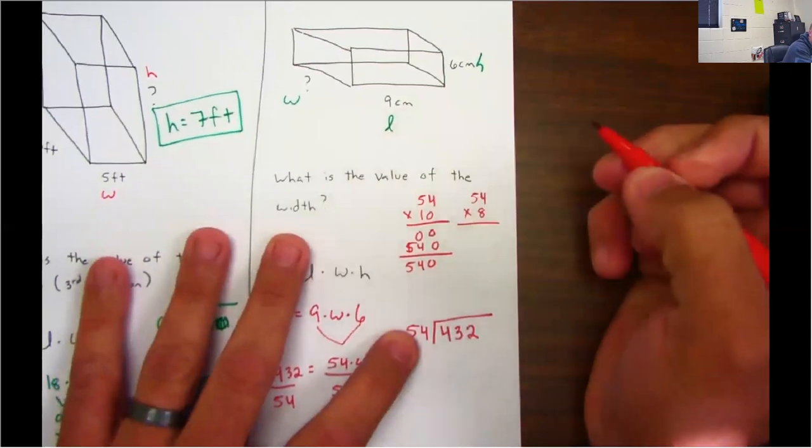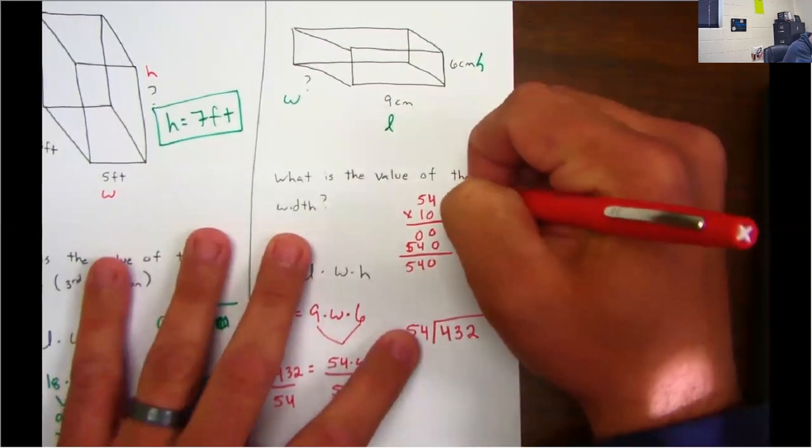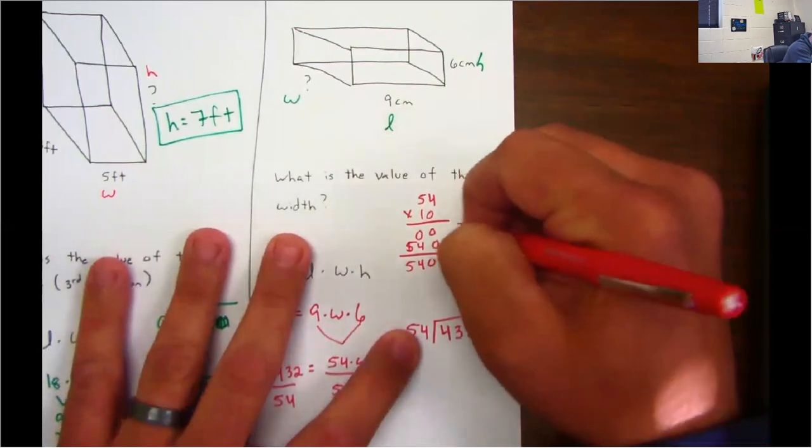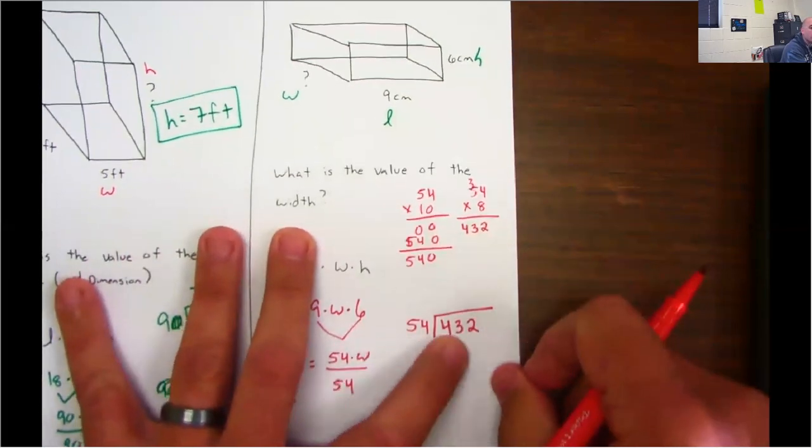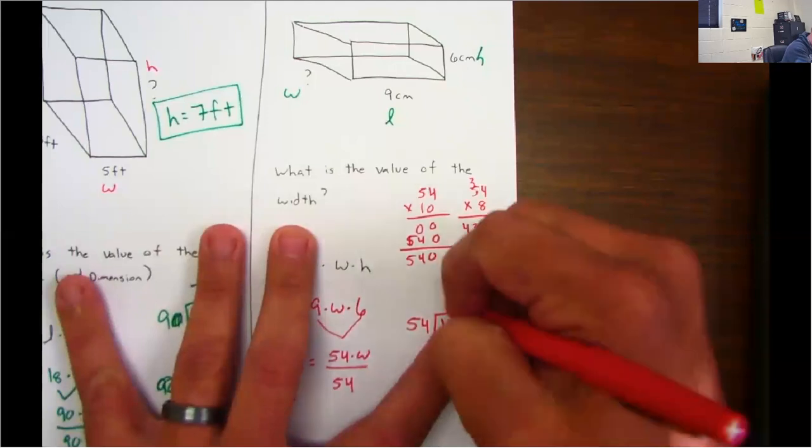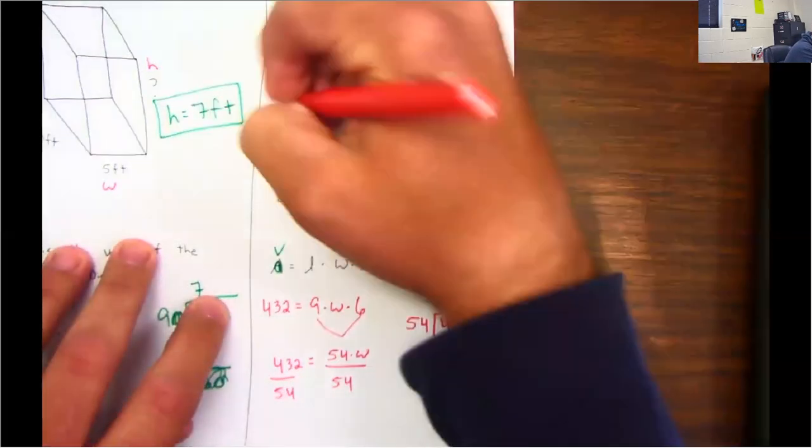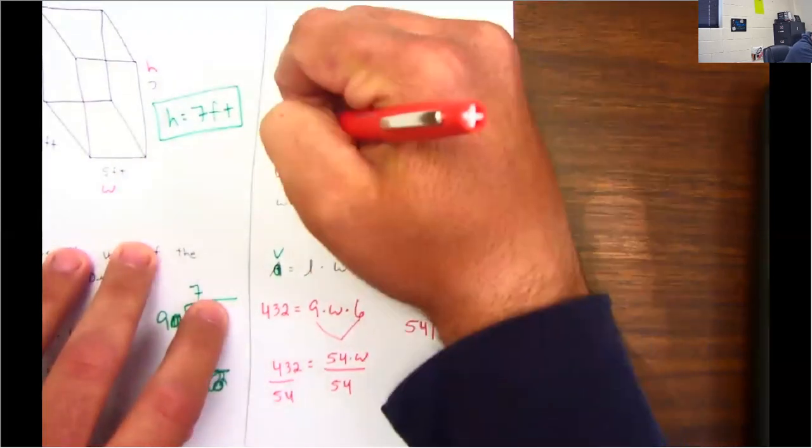8 times 4 is 32. 8 times 5 is 40 plus 3 is 43. Oh, it matches up! So 54 goes into 432 8 times. So your width is 8, and your units is centimeters.